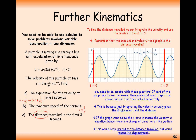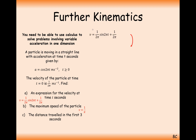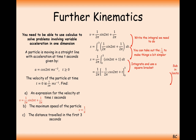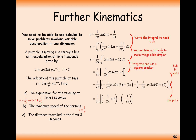So with v equals 1 over 2π sine 2πt plus 1 over 2π, we integrate between limits 3 and 0. It's the first three seconds, so we go from 0 to 3. We can factor out the 1 over 2π to make integration easier. The result is 1 over 2π times the quantity negative cos 2πt plus t, evaluated between 0 and 3. Substituting in the limits and calculating gives a final answer of 3 over 2π meters, or approximately 0.477 meters to three significant figures.